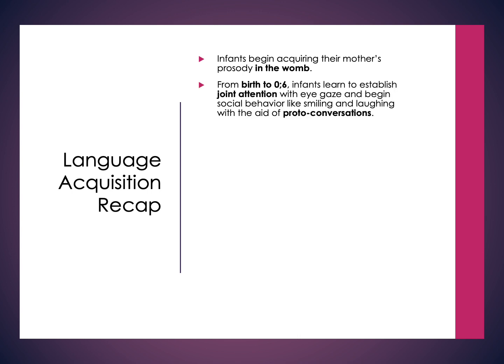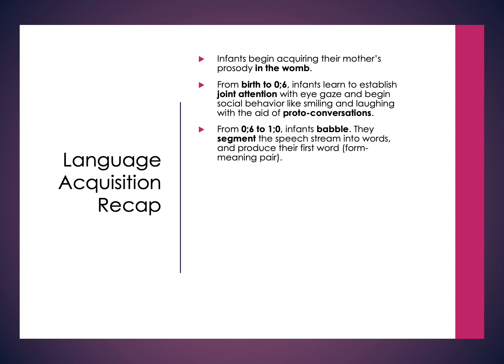In the first six months or so, we start to establish joint attention, being able to follow eye gaze. We start with some of those social behaviors, things like smiling and laughing. Things like proto-conversations can often help with this as well. This is when we first start seeing those develop, and then we'll start to see things like babbling happen around the same time — still within the first year — and beginning to segment the speech stream into words and produce first words, where there's a first form and meaning pair.